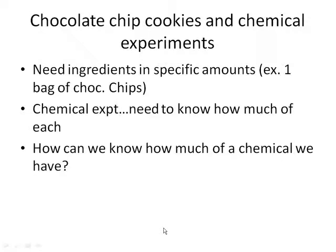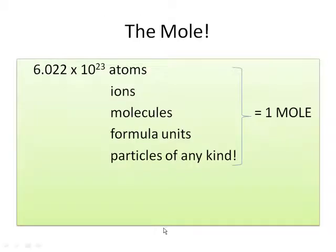A chemical experiment is much the same way. You need to know how much of each reactant, or ingredient, you need in order to produce a certain amount of product. So Chapter 6 is really focused on how can we know how much of a chemical we have. And we're going to start out by introducing a new unit conversion concept, which is the mole.